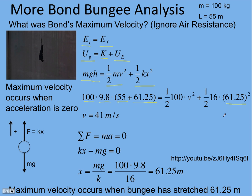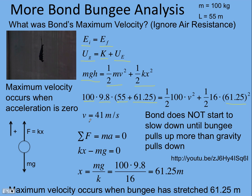Our only unknown then is the velocity. x in the elastic potential energy is how far it's stretched. You solve for v and you get 41 meters per second, again ignoring air resistance. That's over 80 miles per hour. Remember from this one: Bond does not start to slow down until the bungee pulls up more than gravity pulls down. That is the key idea here.